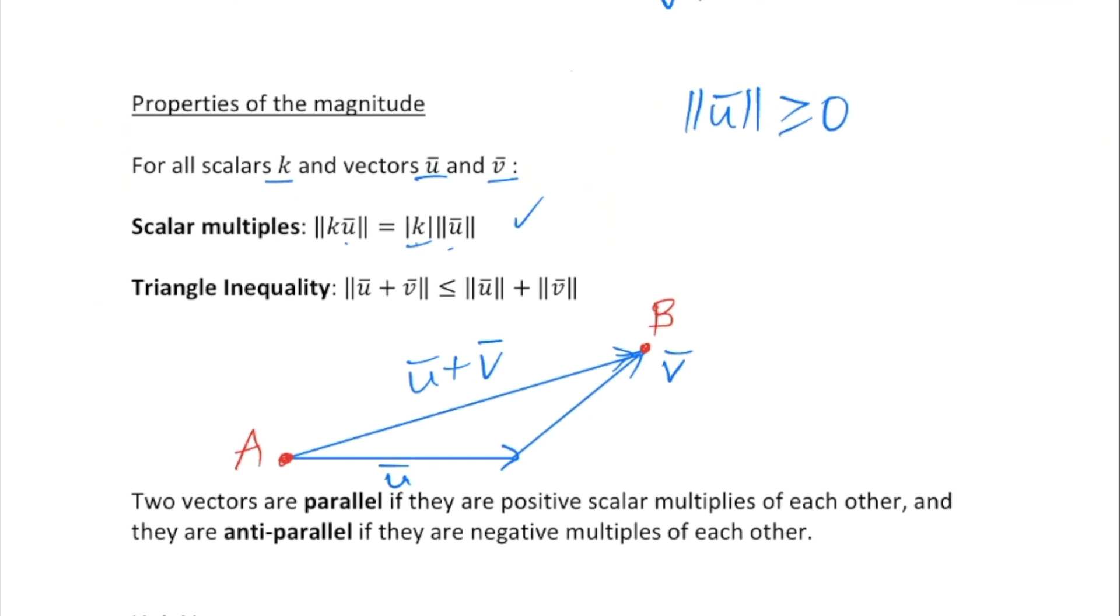The shortest distance between points A and B would be the magnitude of the sum of the two vectors, because it's a straight line. But that distance would have to be shorter than the sum of the two distances along vectors u and v. So the triangle inequality says the shortest distance between two points is a straight line.